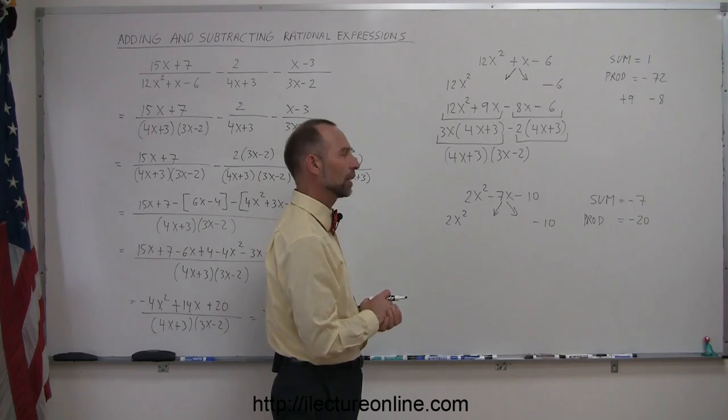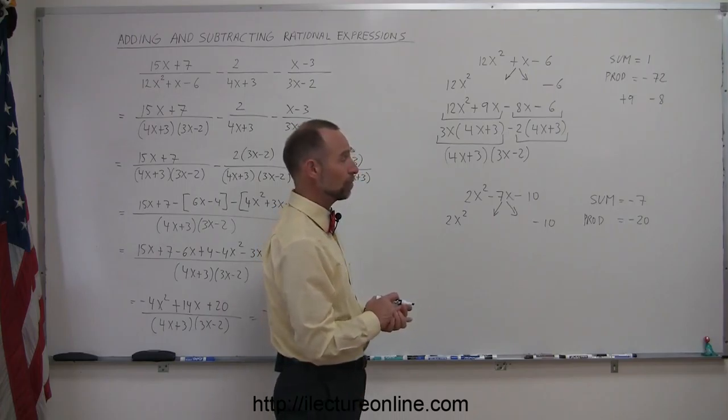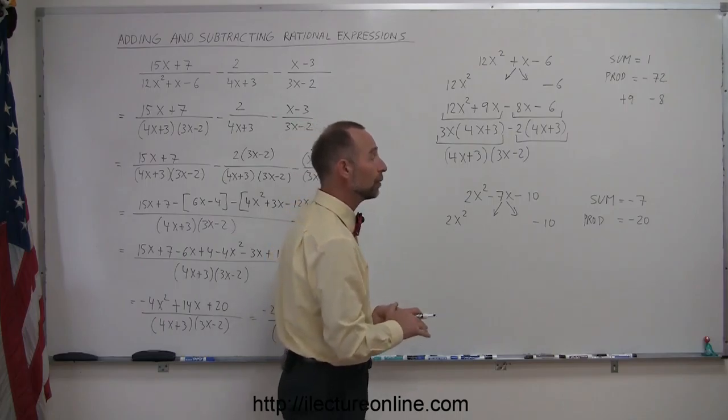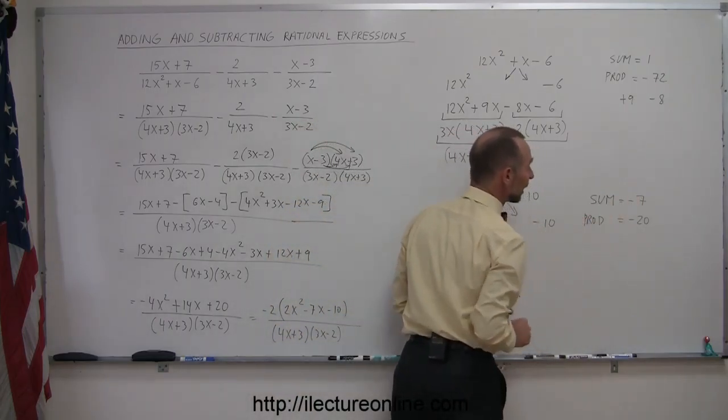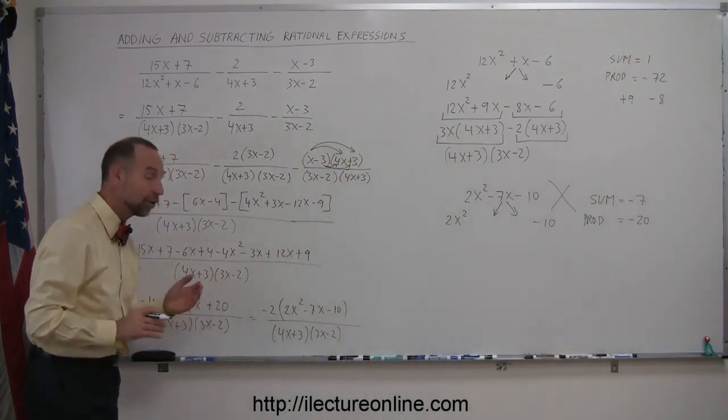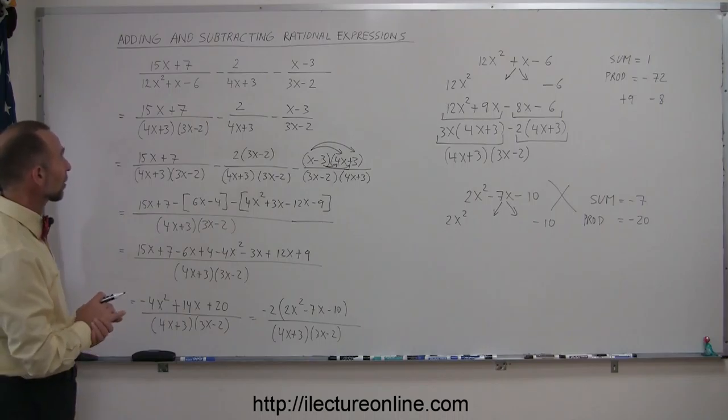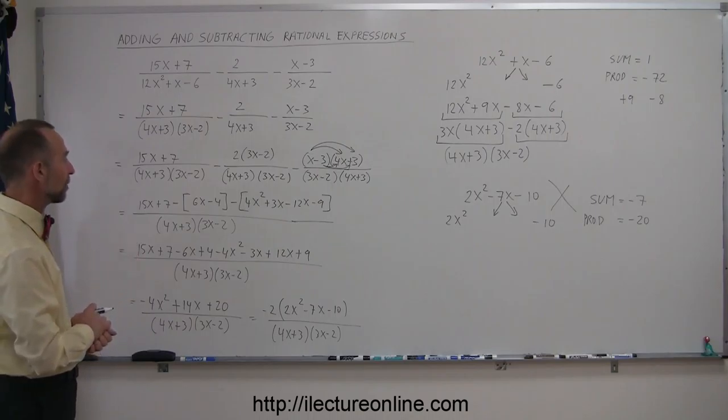Now, there's not a lot of choices. It would be 20 and 1, 10 and 2, 5 and 4. But none of those numbers will add up to negative 7. So, we say, no, we cannot factor that. And so, then this would be the final answer for this particular subtraction of rational expressions. Okay, if you know how to do this, you're in pretty good shape. Then you can pretty well do any one of these types of problems.